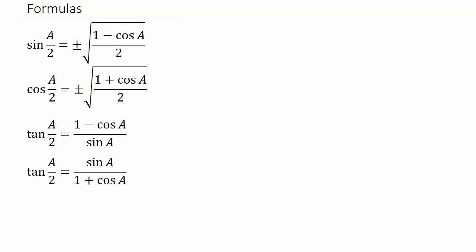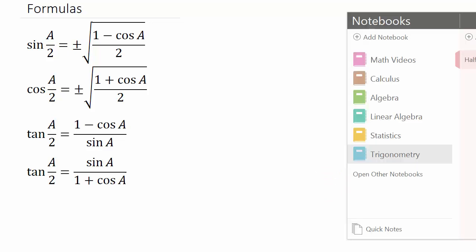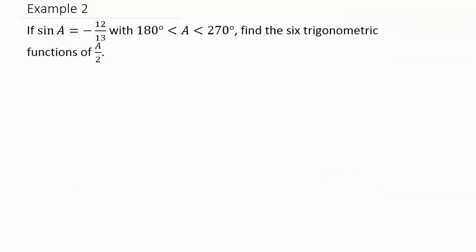Let's get started on example 2. It says: if sine A equals negative 12 over 13, with angle A between 180 and 270 degrees — so that means we are in the third quadrant — find the six trigonometric functions of A over 2. So we're wanting to find sine, cosine, tangent, secant, cosecant, and cotangent of A over 2.